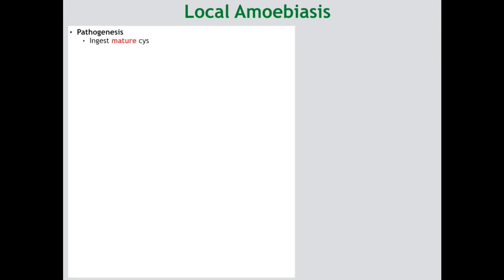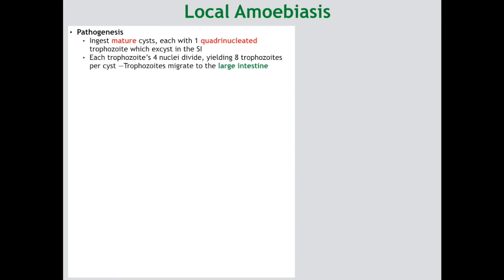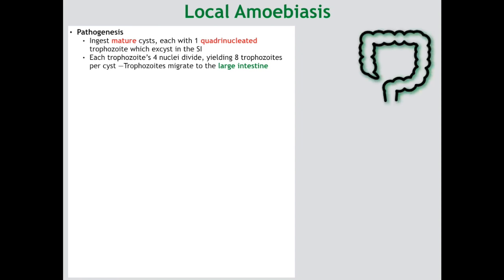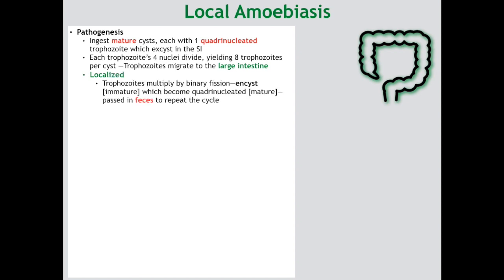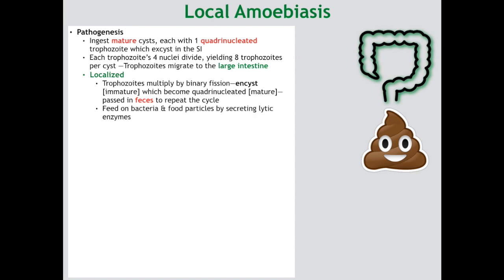For local amoebiasis, pathogenesis starts after ingesting the mature cysts, each containing a multinucleated trophozoite which excysts once reaching the small intestine. Each of the trophozoite's nuclei divide, yielding at least 8 trophozoites per cyst. Those trophozoites then migrate to the large intestine, where they cause local amoebiasis by multiplying via binary fission. The newly formed trophozoites then encyst, mature to become multinucleated, and are passed in feces to repeat the cycle. While residing in the lumen, these amoebas feed on bacteria and food particles by secreting lytic enzymes.